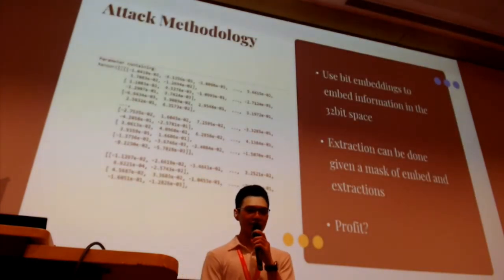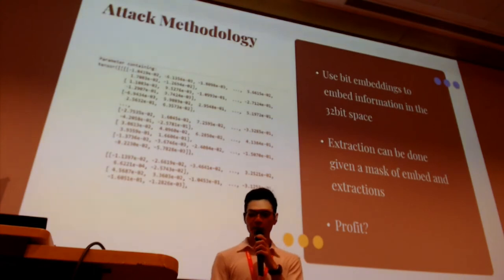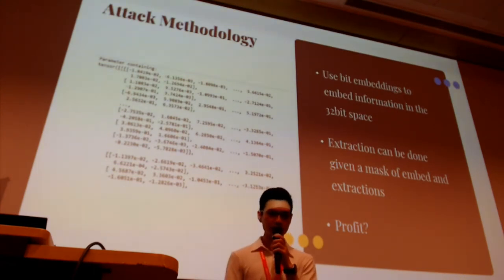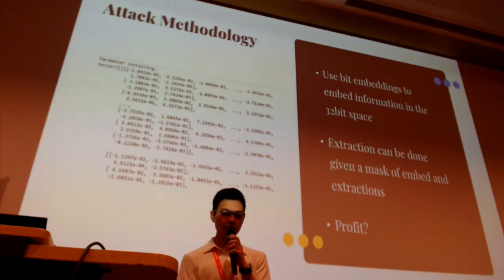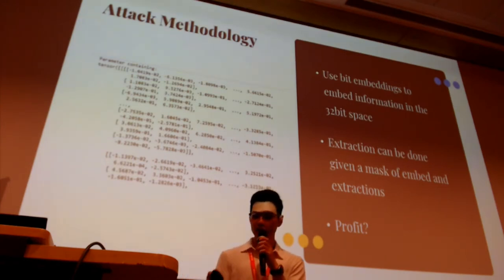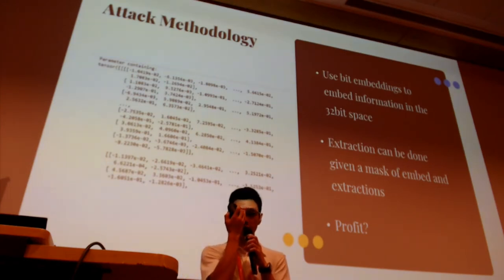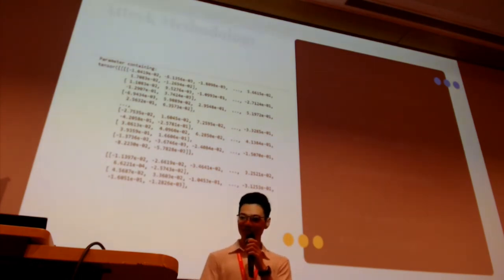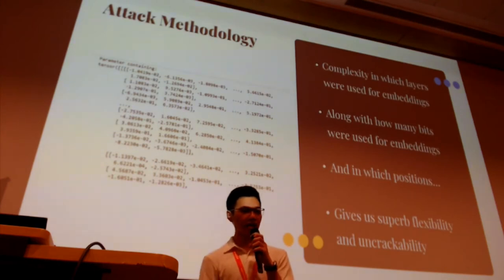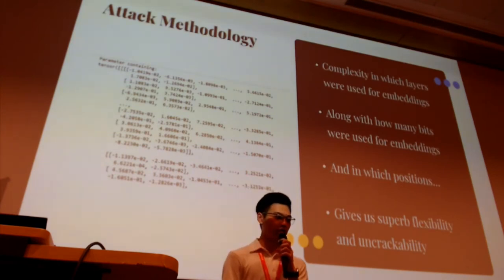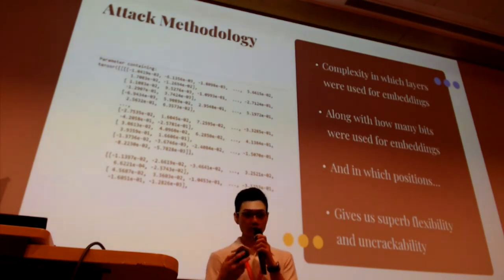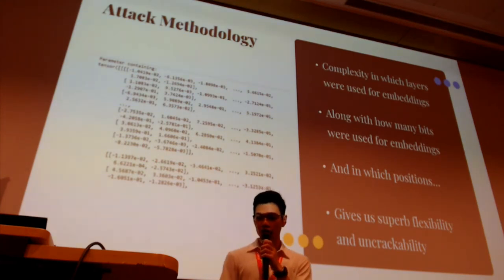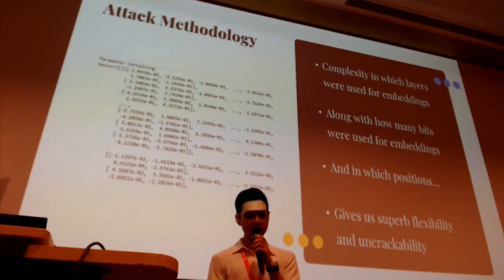My methodology is as follows. We use 32-bit embeddings to embed information within the 32-bit space made available to us by the nodes. Extraction can be done within a mass of embed-and-extract operations — for example, if you want to use the first, third, and fifth bit in the float. Complexity can be introduced in which layers are used for the embeddings, along with which bits are used, which positions, and even bit order — which gives us superb flexibility.